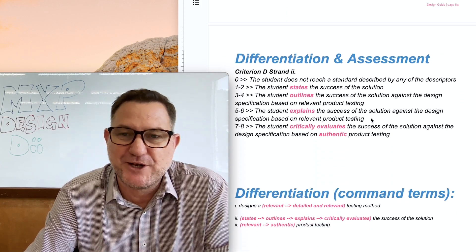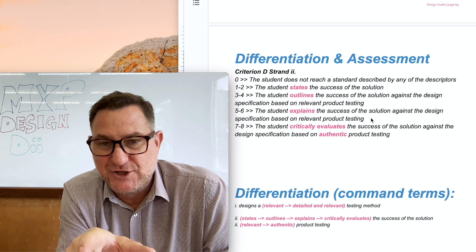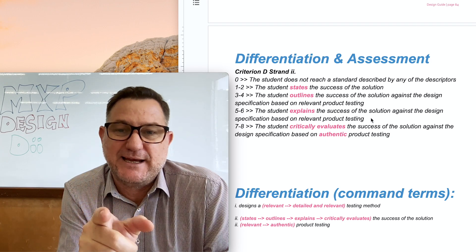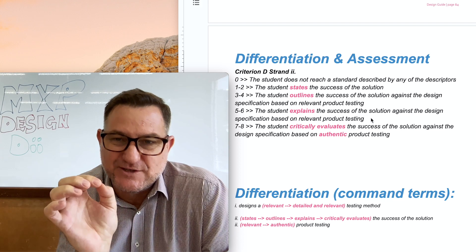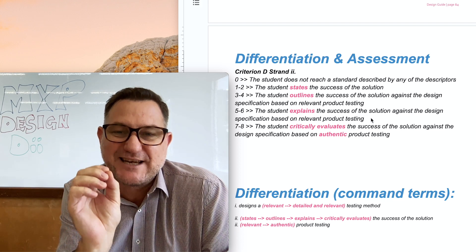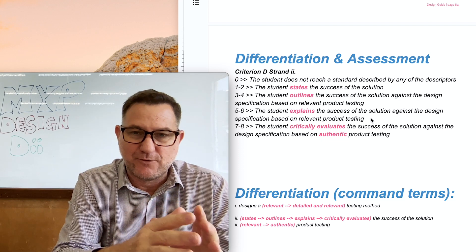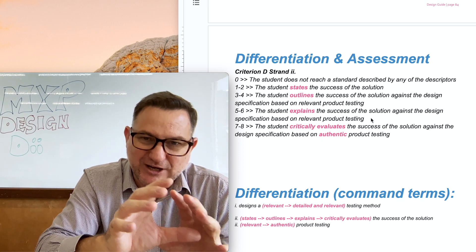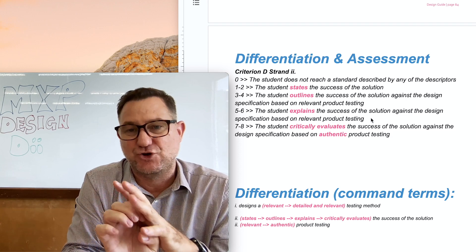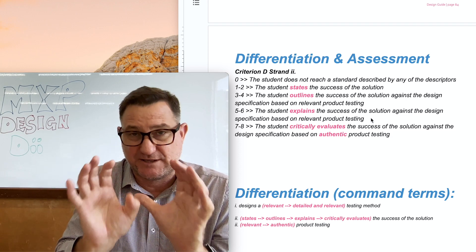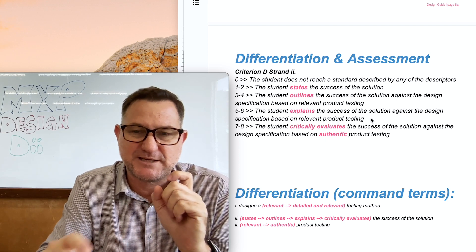To conclude with differentiation and assessment: to get top marks you need to critically evaluate. If you just explain the success you'll get a maximum of 6. If you just outline the success you'll get a maximum of 4, and if you just state the success you'll only get a score of 2. To get top marks of 8, you need to critically evaluate the success of your solution linked to the design specifications based on your authentic testing methods.